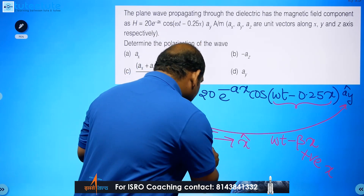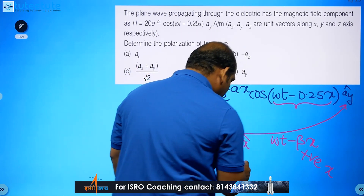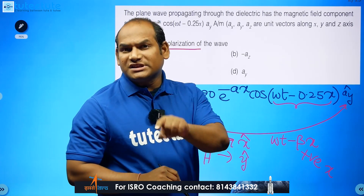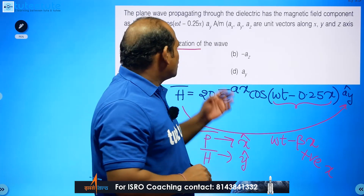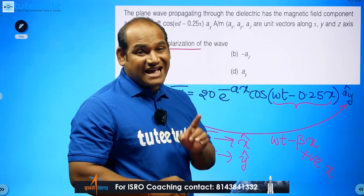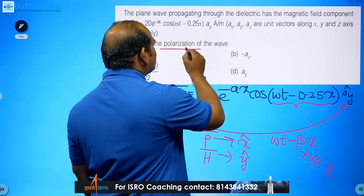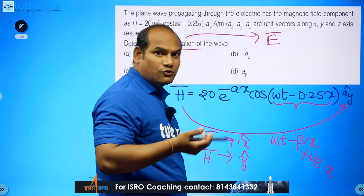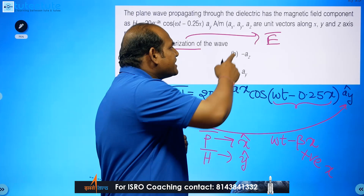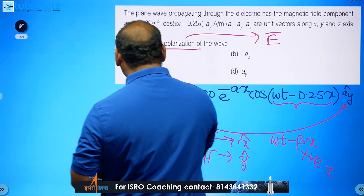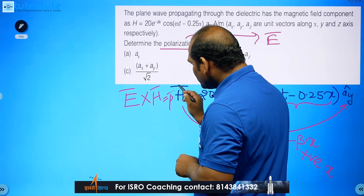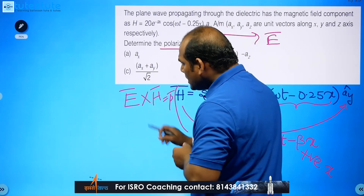Power is traveling in the x direction, and H-bar is available in the y direction. We need to find polarization, but polarization is defined with respect to the electric field, not the magnetic field. Polarization is the locus of the tip of the electric field as a function of time at a fixed location. So we need to find the orientation of E-field from the given H-field data.